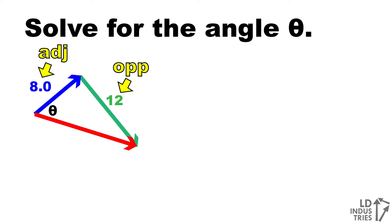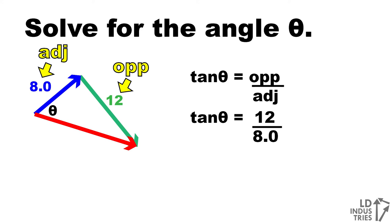Just like before, I'm going to find a trig ratio with opposite and adjacent, which is the tan ratio. And just like before, I'm going to substitute in opposite and adjacent sides. But the difference here is I've got to find the angle. So the way I write this is by saying the angle is equal to the inverse tan, or the tan to the negative 1, of 12 over 8.